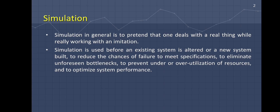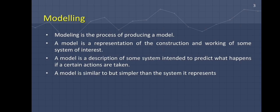Next is modeling. Modeling is the process of producing a model. A model is a representation of the construction and working of some system of interest. A model is a description of some system intended to predict what happens if certain actions are taken. A model is similar to but simpler than the system it represents. One purpose of a model is to enable the analyst to predict the effects of changes to the system.